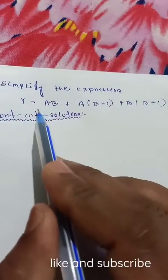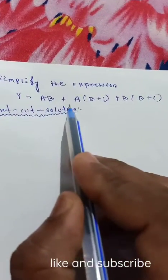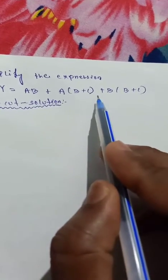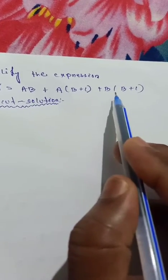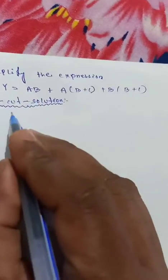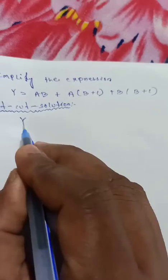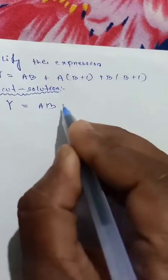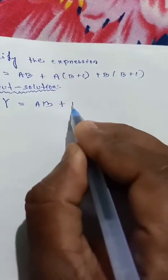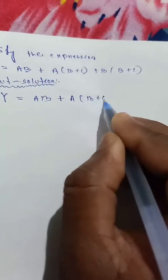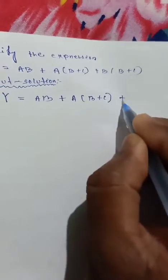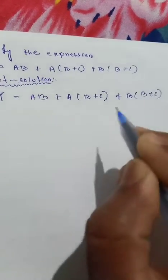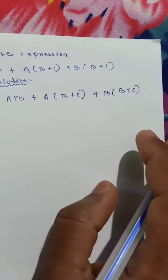Simplify the expression: y is equal to ab plus a whole of b plus c plus b whole of b plus c.